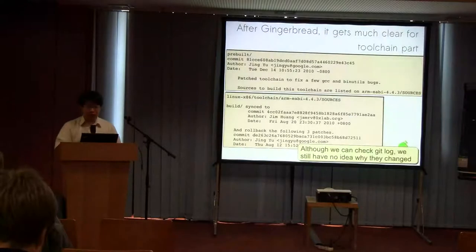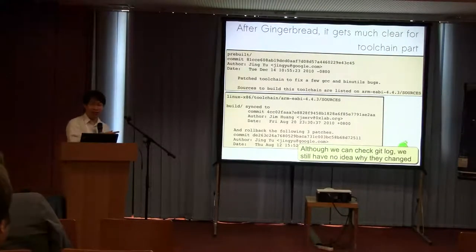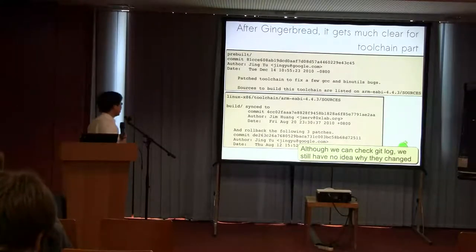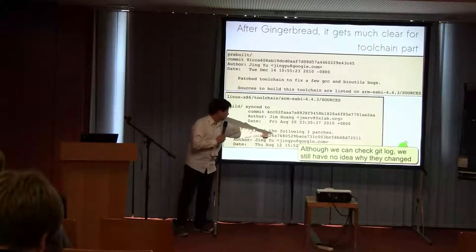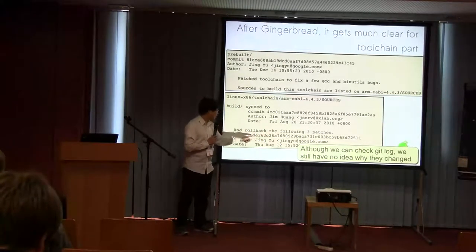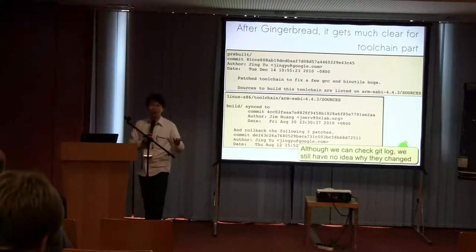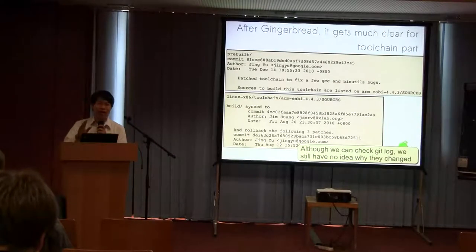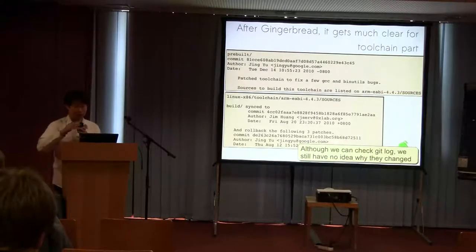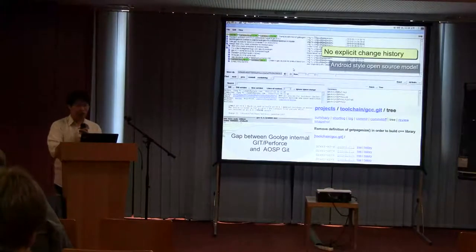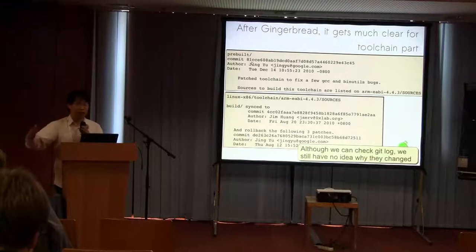Since Gingerbread it's gotten somewhat better and there is a log. But you still have no idea about why things changed. For example, I contributed something and there were three patches with no reason given — Google engineers just gave no explanation. That's because Google has an internal tree with more detailed history and more aggressive development. They export changes to AOSP according to their release flow. So if you're in the open source world, you only see small changes, while Google has the full history.